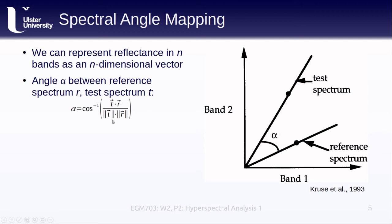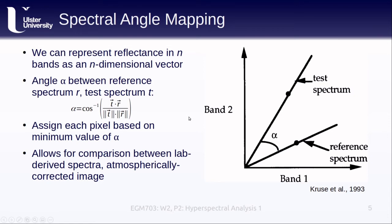As the inverse cosine of the dot product of T and R divided by the product of the magnitude of the two vectors. We then assign each of our pixels to a given reference spectrum, or end member, based on the smallest angle between our test spectrum and our set of reference spectra. This approach allows us to directly compare lab or field-derived spectra and our atmospherically corrected image. For more on this approach, I've included a link at the end of this lesson to the 1993 paper by Kruse and others that describes an application of spectral angle mapping. In addition, we will see some more of this in this week's practical.